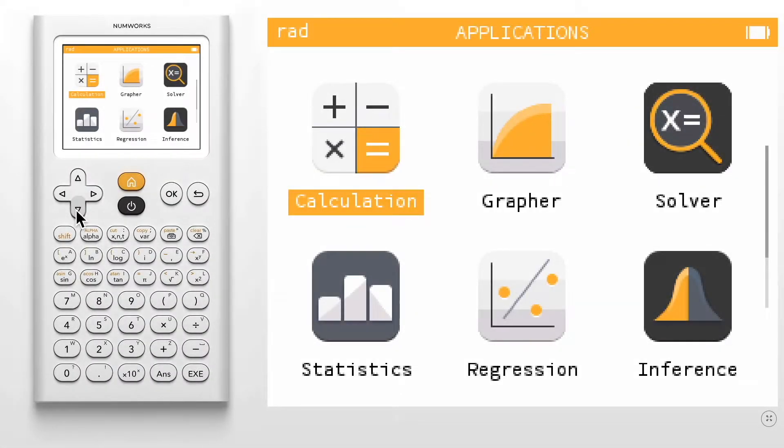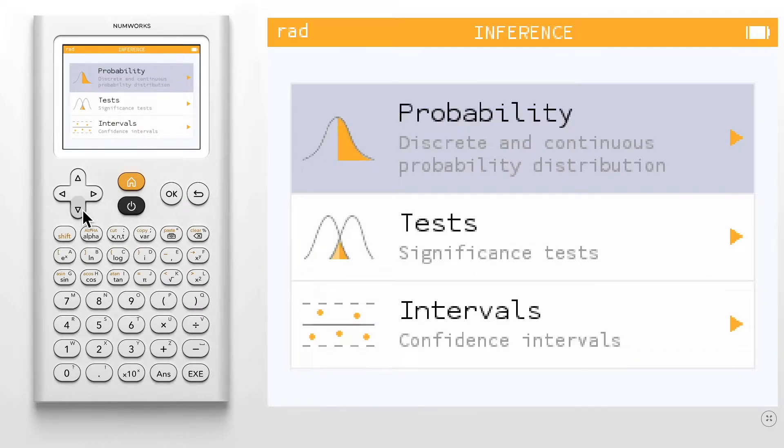Today we're going to learn how to construct a confidence interval using one sample on the NumWorks graphing calculator. To begin, enter the inference application and select Intervals.